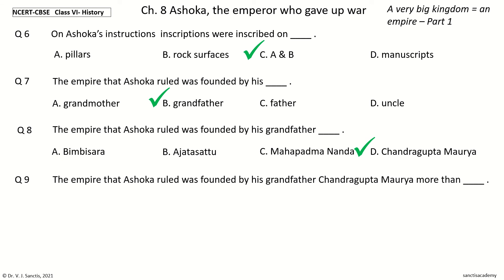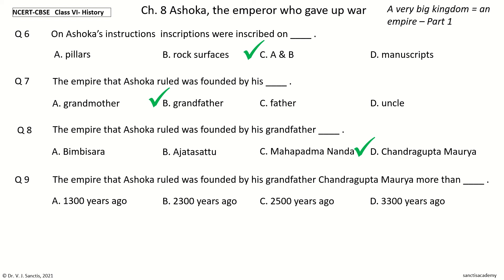Question 9: The empire that Ashoka ruled was founded by his grandfather Chandragupta Maurya more than — blank. The options are: 1,300 years ago, 2,300 years ago, 2,500 years ago, 3,300 years ago. The answer is 2,300 years ago. So the empire was founded more than 2,300 years ago.